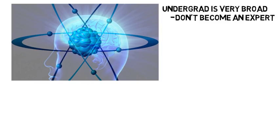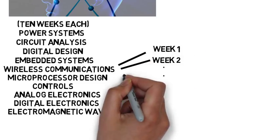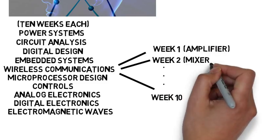And here's what I mean by this. As an electrical engineer, I took a lot of classes covering many topics. I took a class on power systems, basic circuit analysis, digital design, embedded systems, wireless communications, and many more. And all of those classes were 10 weeks for me. So if you look at let's say the wireless communications class, there were 10 weeks of various topics. Maybe one of the weeks I learned about amplifiers, then the next was about mixers, and so on.